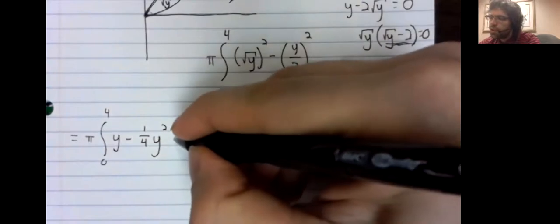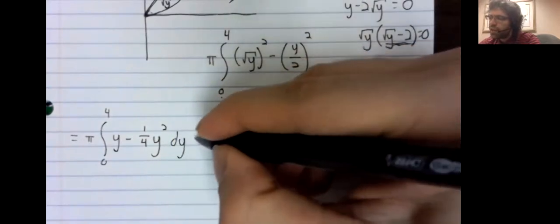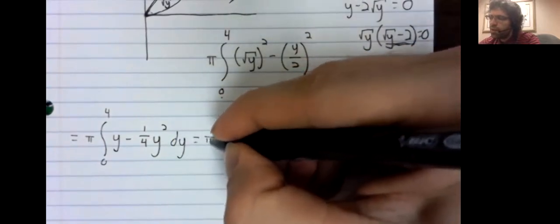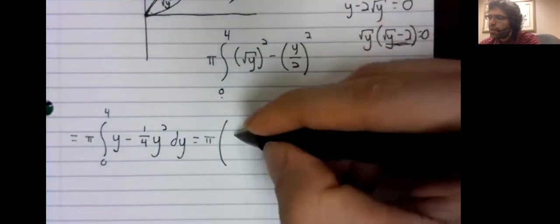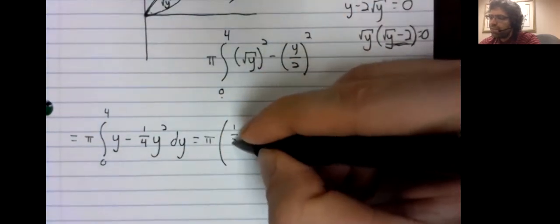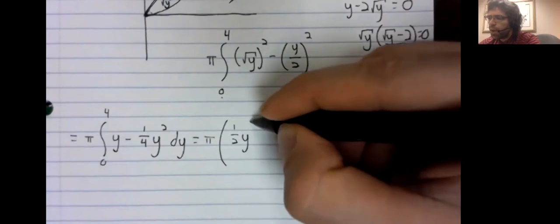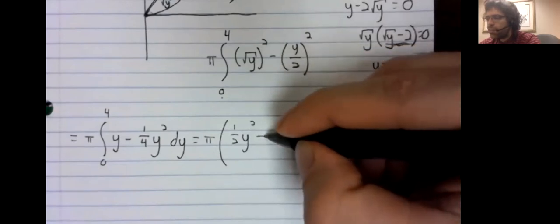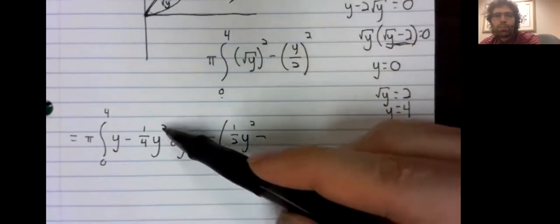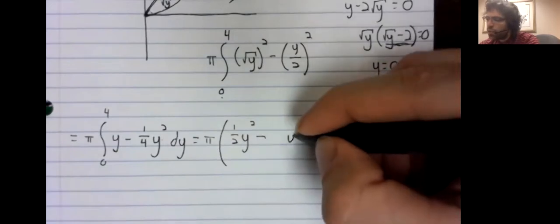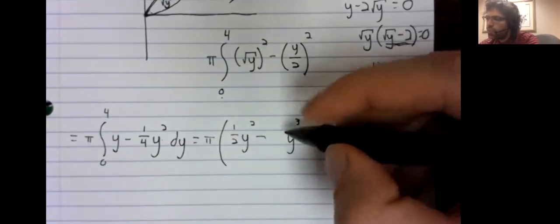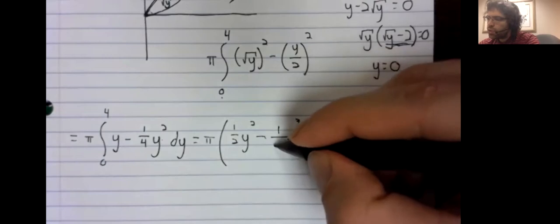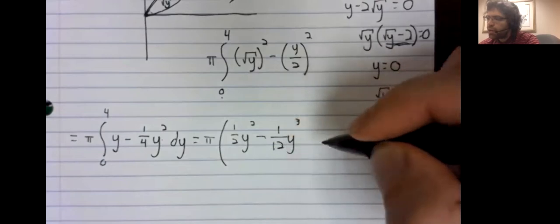We need an antiderivative for y. One half y squared. Here we'll bump y squared up to y cubed, but we'll also divide by 3.